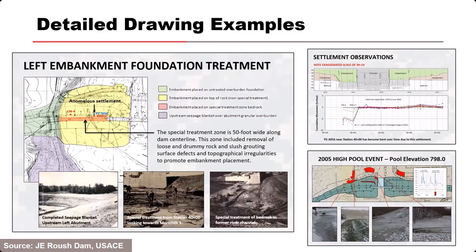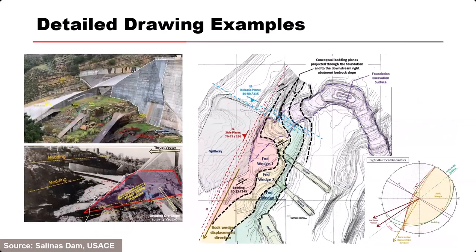This next one is Salinas Dam. This drawing was put together for a failure mode where an earthquake leads to failure of the right thrust block by sliding into the foundation. The annotated images, stereo net, and drawing of the right abutment illustrate the main geologic and structural features used with other information to evaluate the kinematics of a potential right abutment rock wedge.